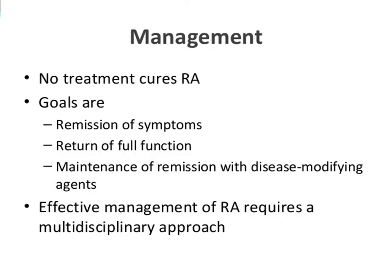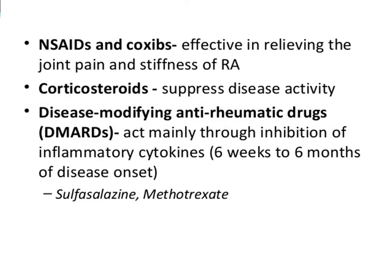There is no particular cure for rheumatoid arthritis; only symptomatic treatment can be given. Goals include remission of symptoms, restoration of full function, and maintenance of remission with disease-modifying agents. Effective management requires a multidisciplinary approach. Patients should avoid triggering factors, which differ from person to person. NSAIDs — non-steroidal anti-inflammatory drugs — are given, along with corticosteroids to suppress disease activity and disease-modifying anti-rheumatic drugs (DMARDs). The most commonly used drug is sulfasalazine.